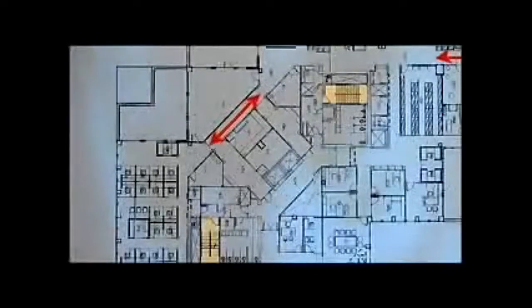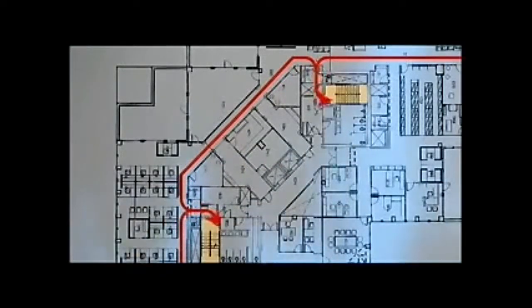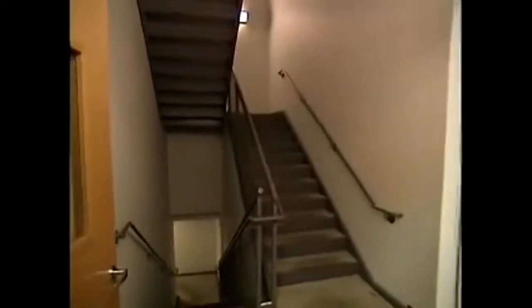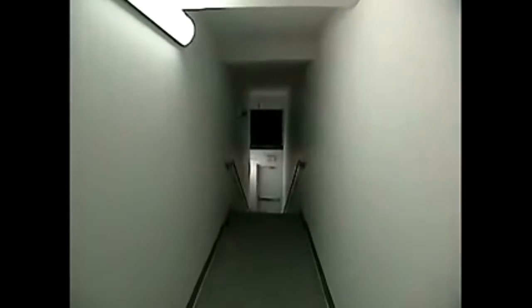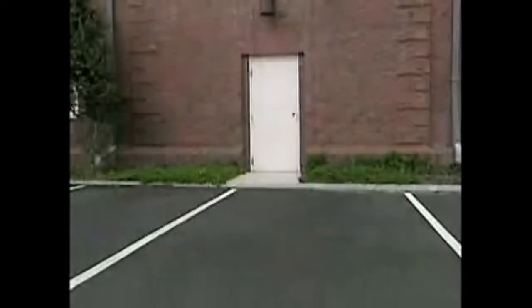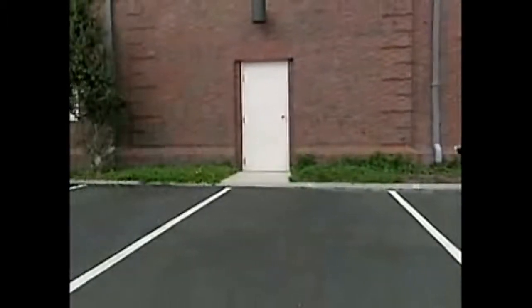An egress system is a series of protected paths that help employees reach a safe location, either inside a building or out. These paths are usually corridors or aisles that lead to an exit, which is usually an enclosed, well-lit, uncluttered stairwell. The stairwells lead evacuees to what's known technically as an exit discharge — this is the area between the exit and a public way, like a street or a parking lot.